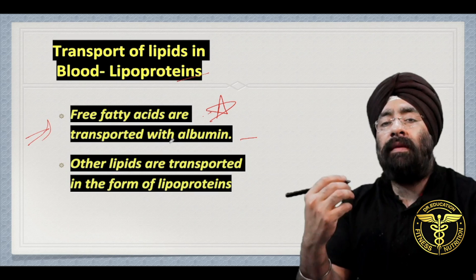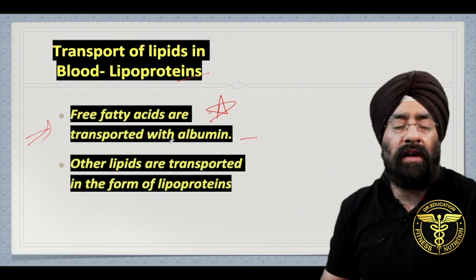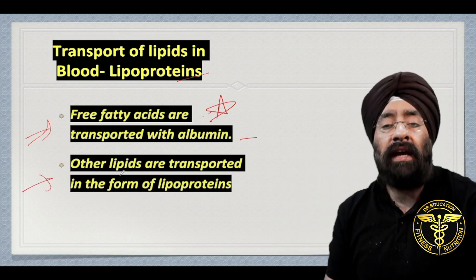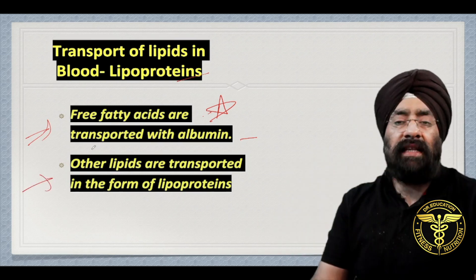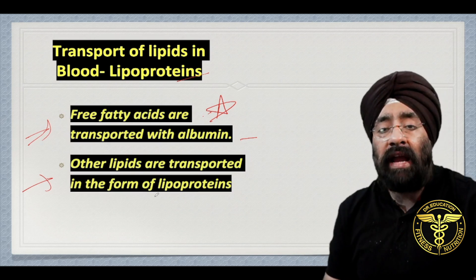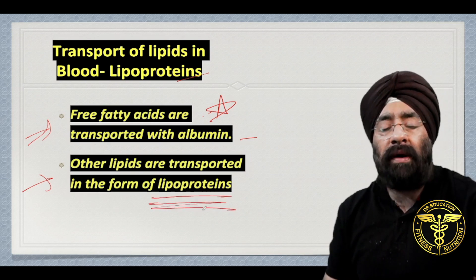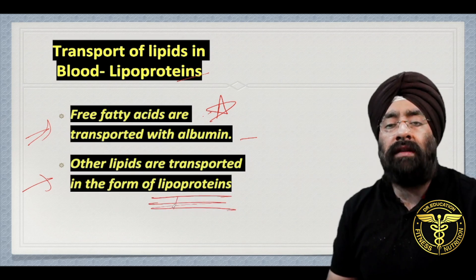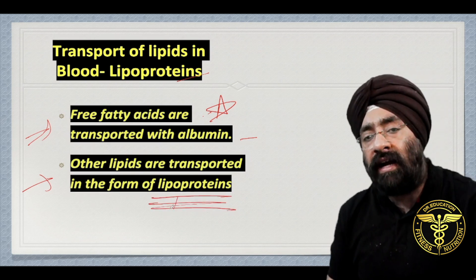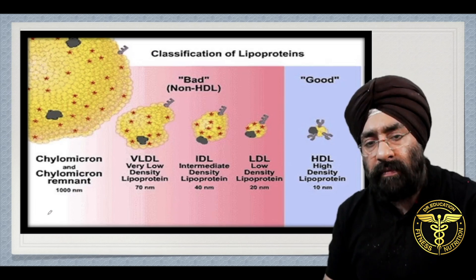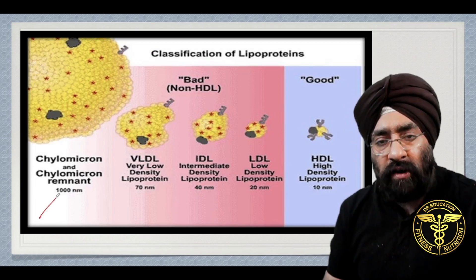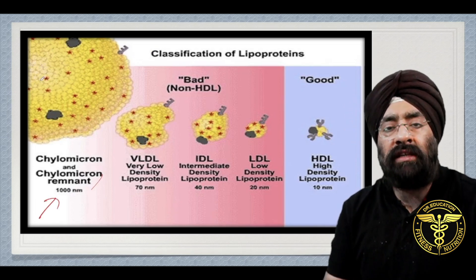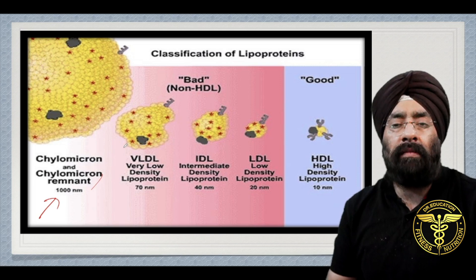Albumin is the protein which your liver makes. The remaining fats are transported as lipoproteins by the liver. Lipoprotein types include chylomicron and chylomicron remnant, which is the biggest molecule.